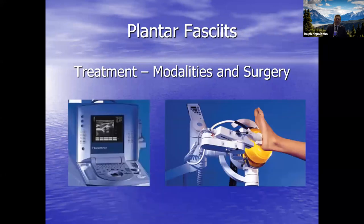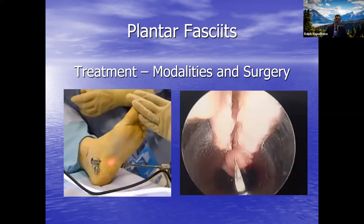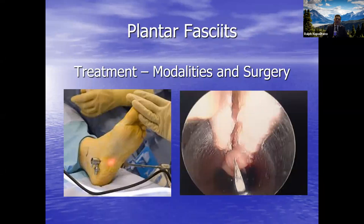Extracorporeal shockwave therapy visualizes the plantar fascia and delivers high-energy ultrasound — an office procedure. Plantar fasciotomy can be done with a scope or a slightly larger incision, and in concert with Achilles lengthening. The Achilles terminates from the gastrocnemius muscle — which has two heads — and the soleus muscle below it. A gastroc recession or tendo Achilles lengthening operates above the plantar fascia to give more flexibility. These are tried and true orthopedic procedures performed at OrthoNeuro.